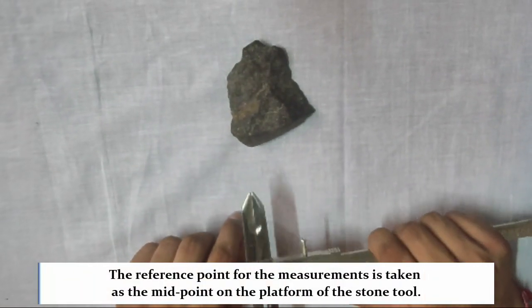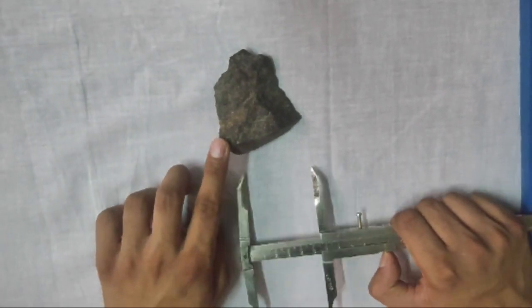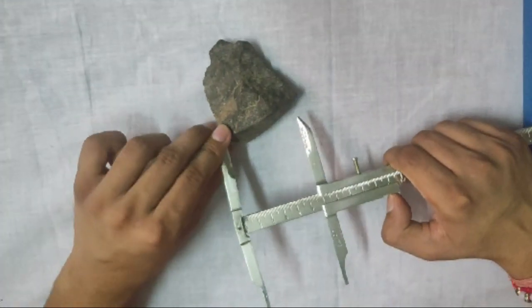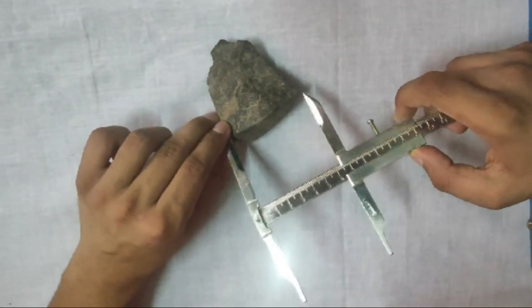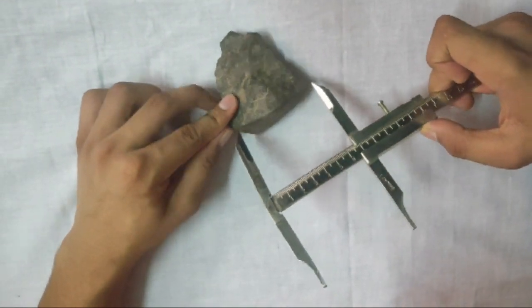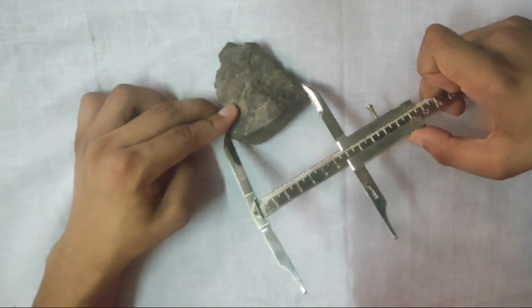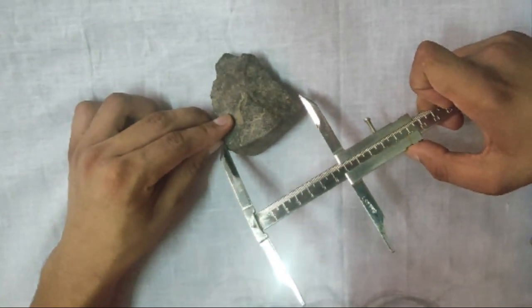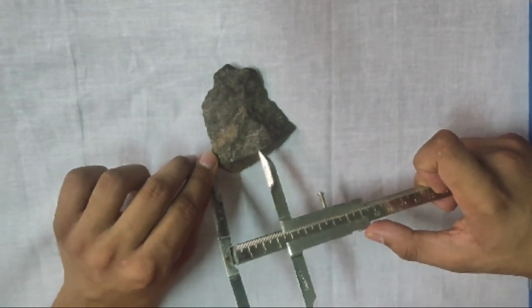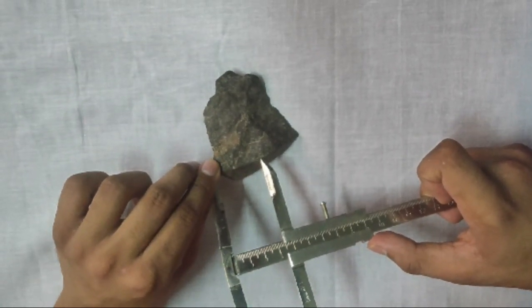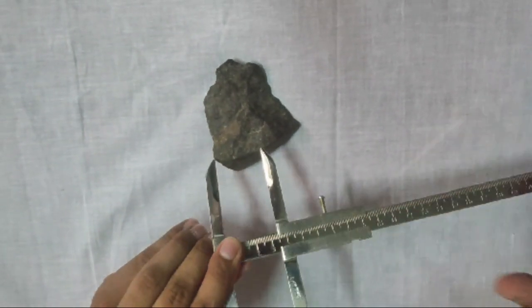To begin our measurement, we will have to choose a reference point. The reference point is usually taken as the midpoint of the platform. Let us measure the platform. It comes around 6.8cm hence our midpoint or the reference point will be taken at 3.4cm which is somewhere here. Now I'll mark it with a pencil or a chalk.